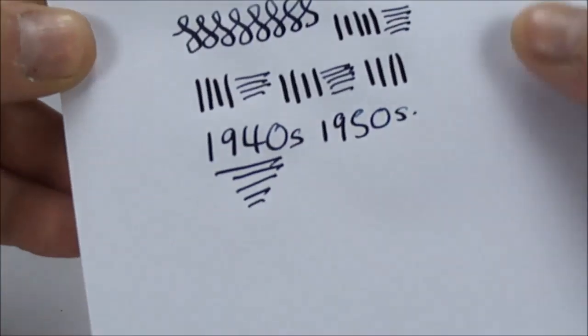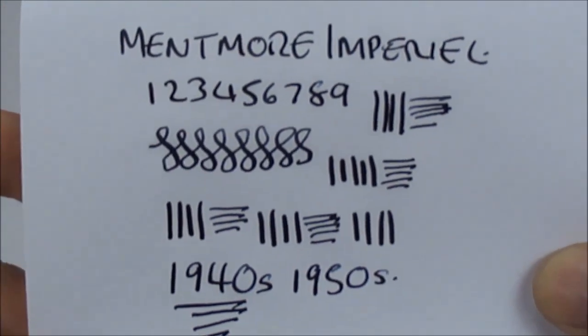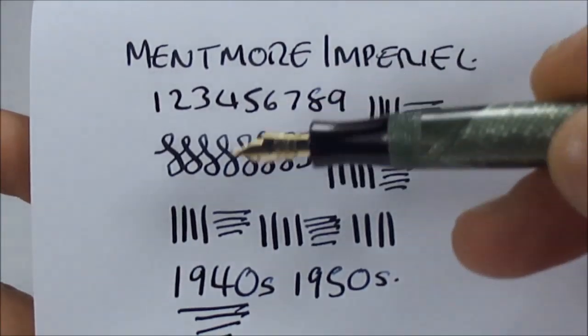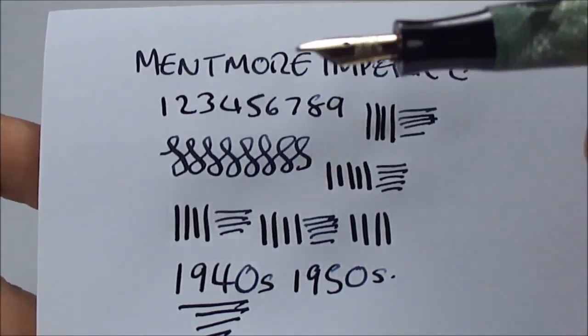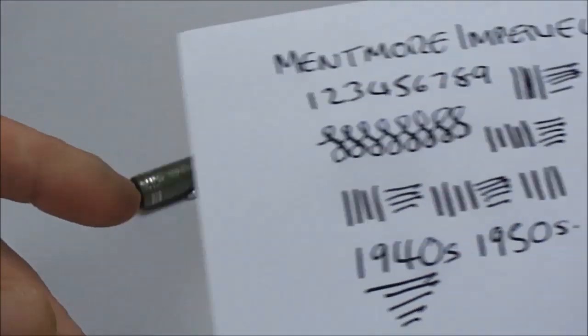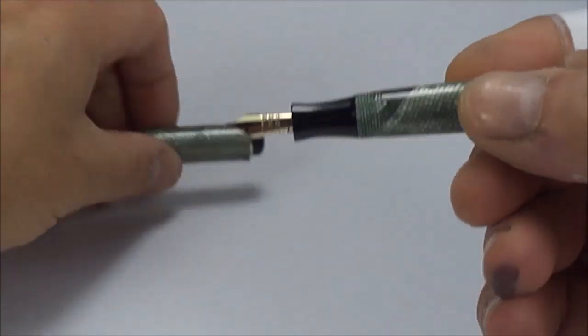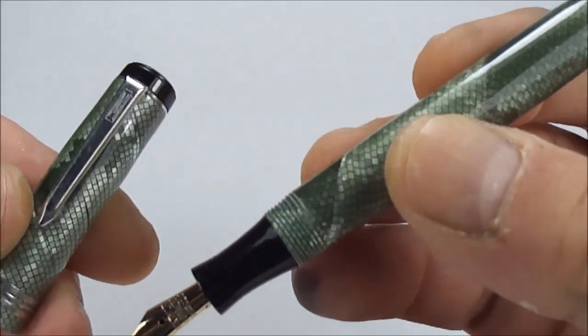A lovely, lovely writer. As you can see there by the writing sample, we're getting quite a variation on the line, which is absolutely lovely. A very nice writer.